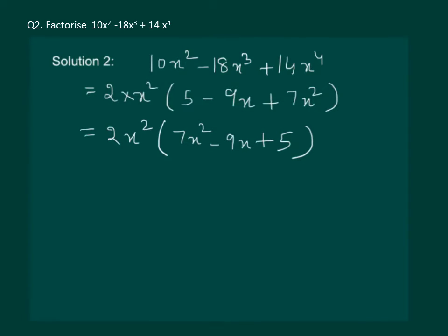Since you have not been taught how to factorize a quadratic equation, hence, at this stage, we will say that 2x square into 7x square minus 9x plus 5 is the required answer, or that they are the required factors of the given question.